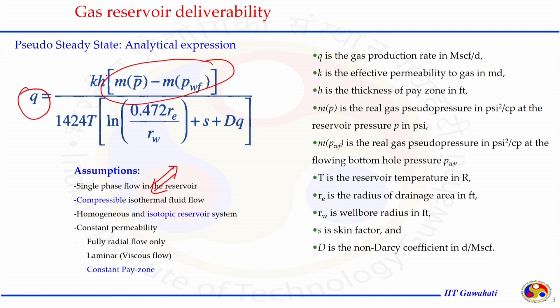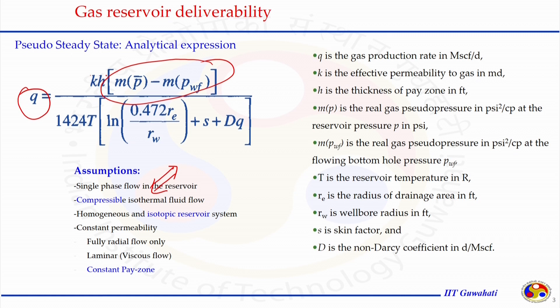The gas is compressible; the reservoir is homogeneous in terms of porosity and pay-zone thickness, as well as isotropic in terms of permeability. Fully radial flow has been assumed, and laminar viscous flow regime was considered, so Darcy's law was applied to replace the expression in the material balance equation. It is important to note in what unit each term appearing in this equation is defined.